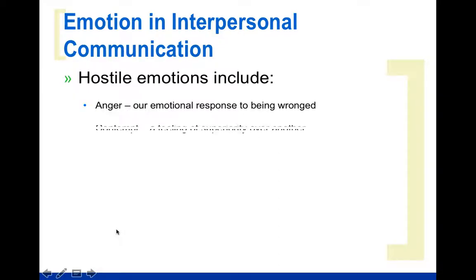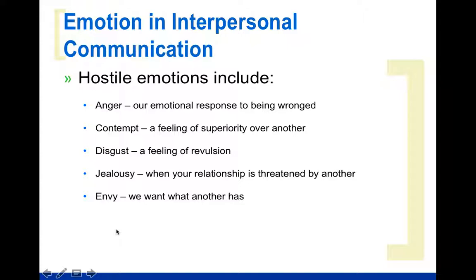The next is hostile, and there's a variety of these. Basically these are the ones where we're angry, or we have contempt, disgust, jealousy, or envy. Anger is when somebody's wronged us and we get mad. Contempt is associated with a feeling of superiority over another. Disgust is when we literally feel revulsion — we feel sick, we feel gross. Jealousy is when you see a relationship being threatened by another. And envy is when we want to have what somebody else has. These are all considered hostile emotions.